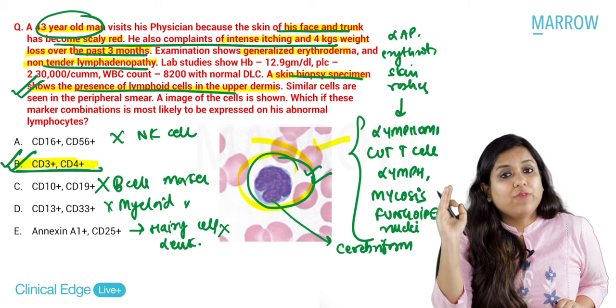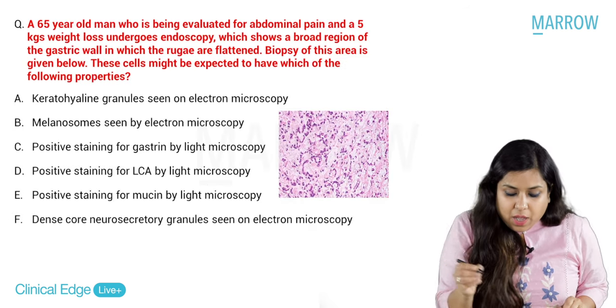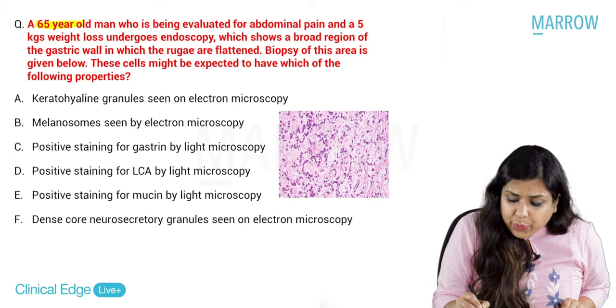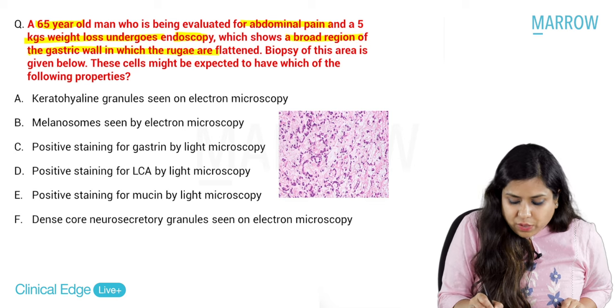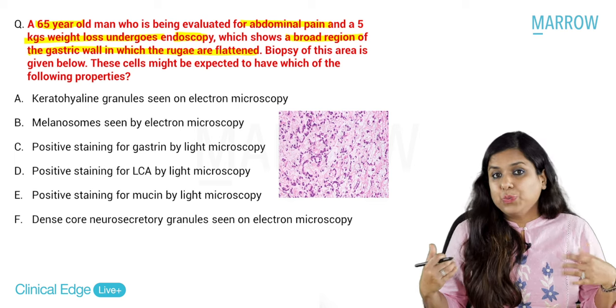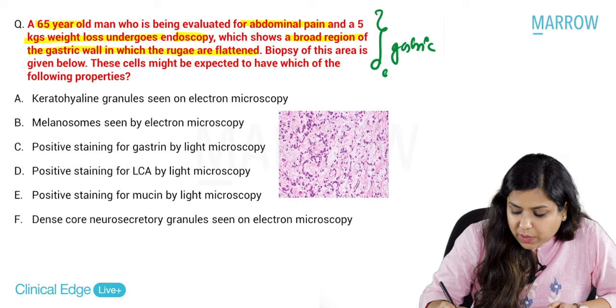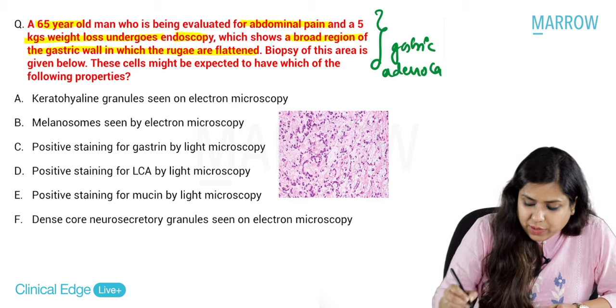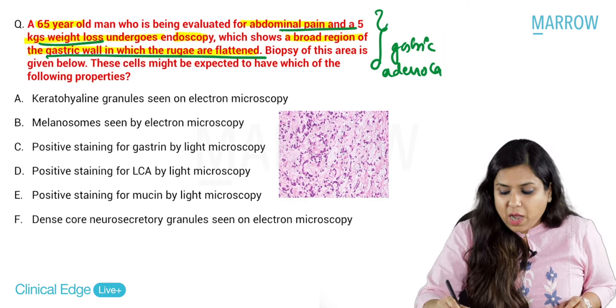If you keep on revising your existing notes, you will be able to make a diagnosis and then answer questions related to that particular disease. Let us move to the next question. A 65-year-old man being evaluated for abdominal pain and 5 kg weight loss undergoes endoscopy, which shows a broad region of gastric wall in which rugae are flattened. With this history of 5 kg weight loss in a month along with flattened rugae, I think of gastric adenocarcinoma.